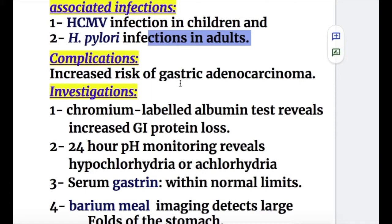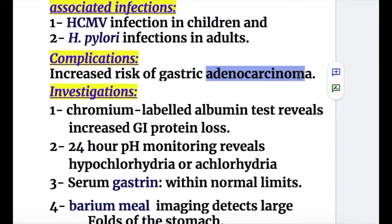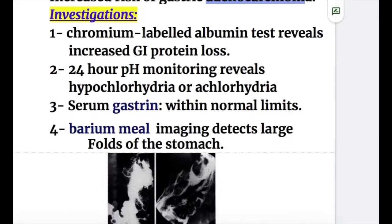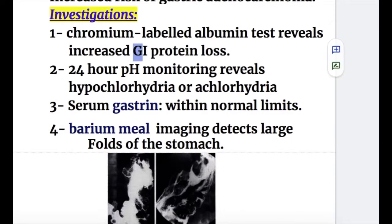The complication of Menetrier's disease is gastric adenocarcinoma. Regarding investigations, number one, the chromium-labeled albumin test reveals increased GI protein loss.